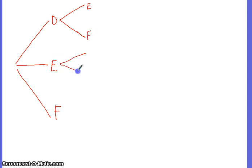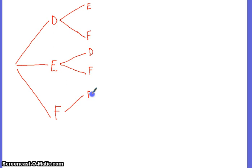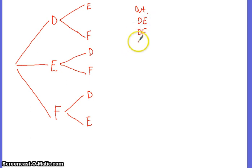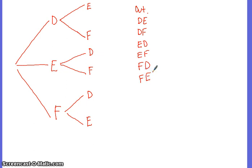If Earl is selected first, the outcome could be D or F. If Fernando is selected first, the outcome here would be D or E. So the possible outcomes are: D-E, D-F, E-D, E-F, F-D, and F-E.